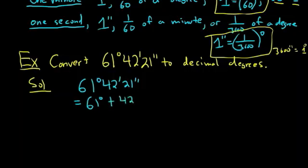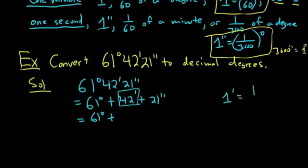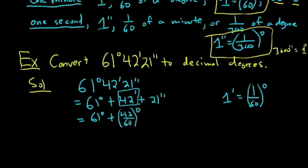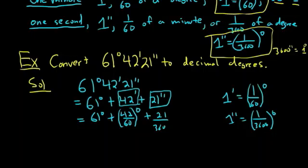plus 42 minutes plus 21 seconds. So this is 61 degrees plus, now we can convert this into degrees. We know that one minute is equal to 1/60th of a degree, so this should be 42 over 60 degrees, plus, and then now we can convert this and we know that one second is 1/3600th of a degree, so this is going to be 21 over 3600 degrees.